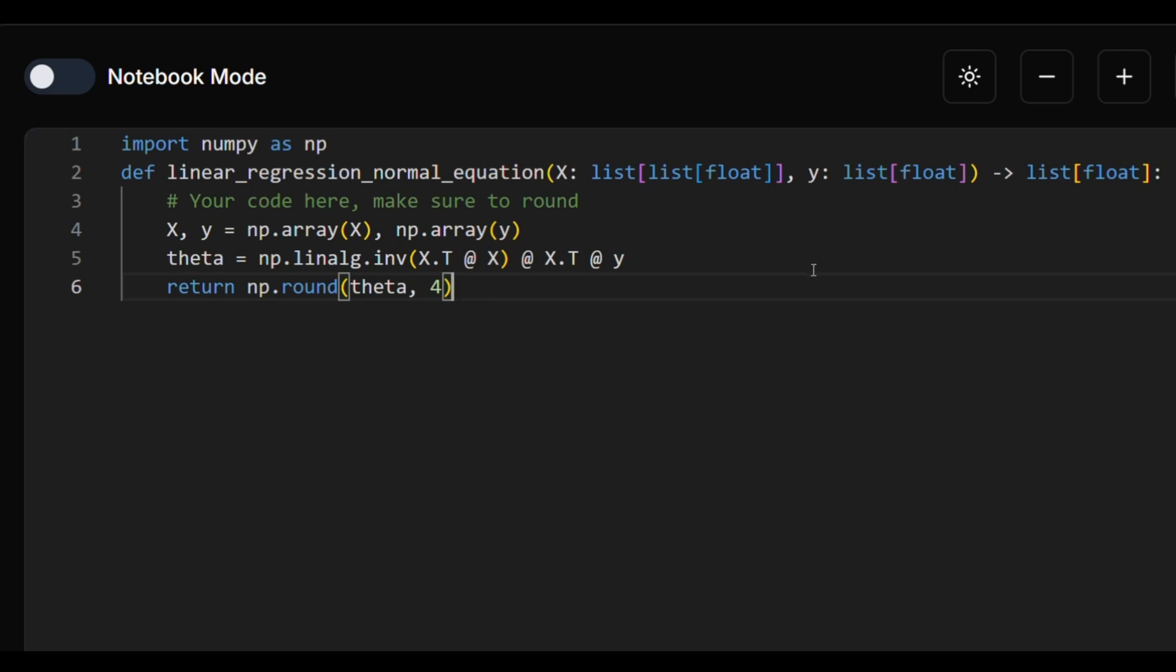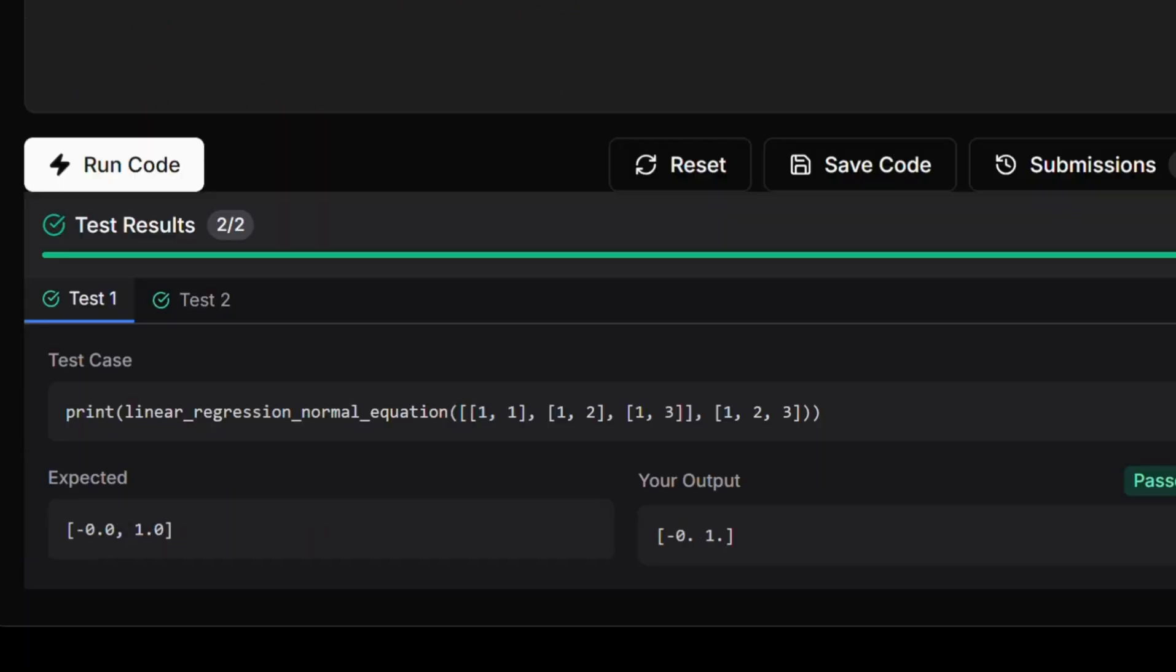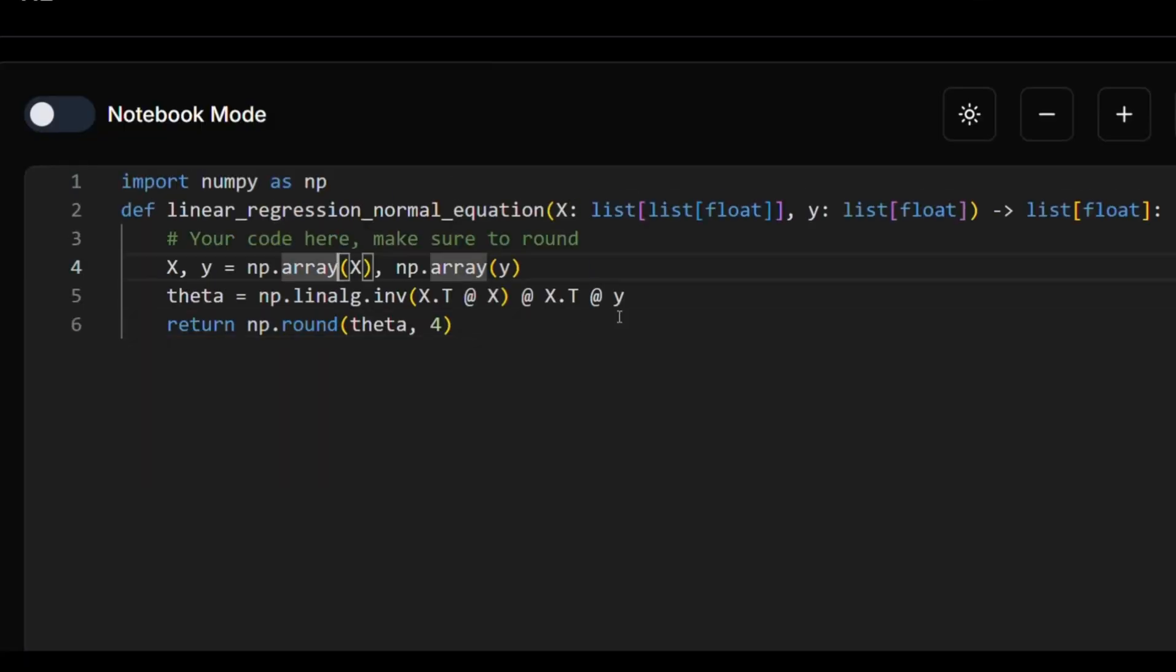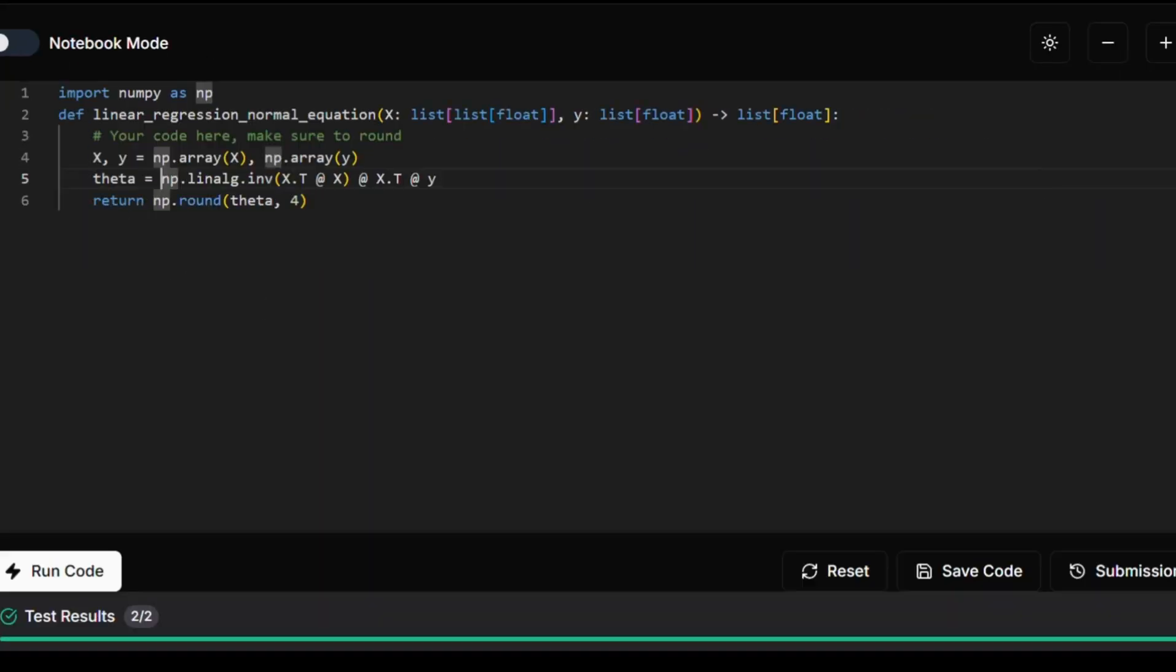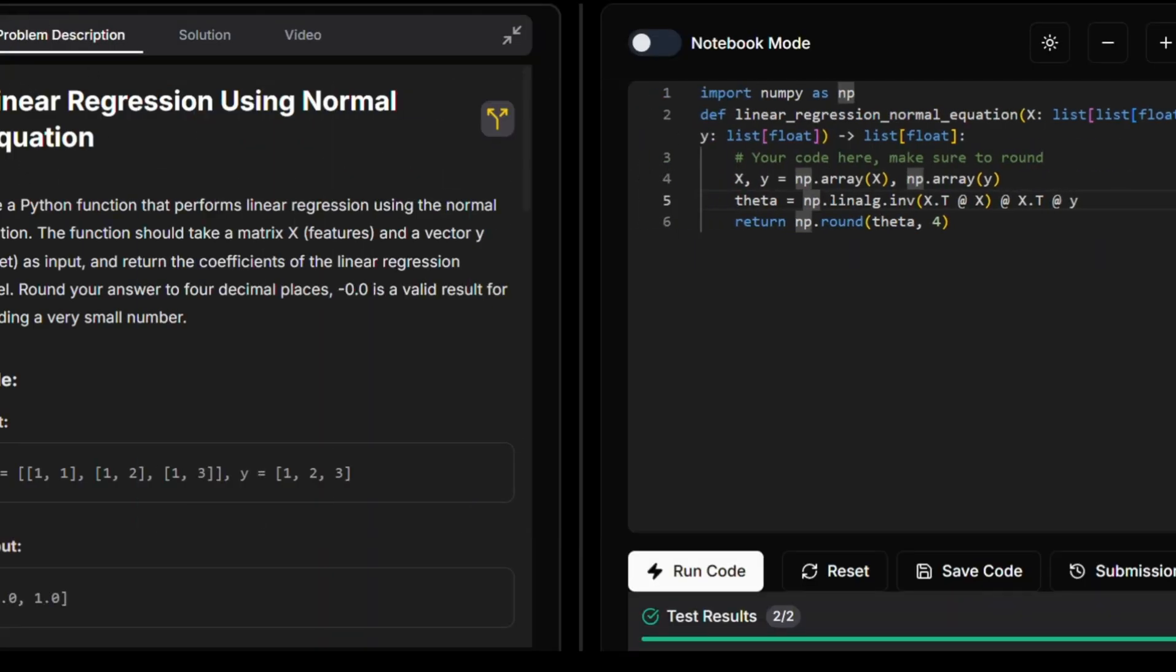So let's see if this runs, we'll try to run all our tests. And it does. So this worked perfectly. Again, I didn't show you how to derive this equation, I'll do this in a future video. And also, note that we just showed you one way of how to solve linear regression using this normal equation. And in the next video, I'll show you how to do it using gradient descent.